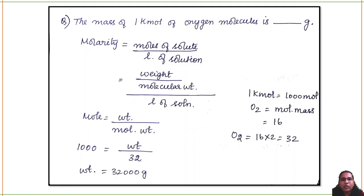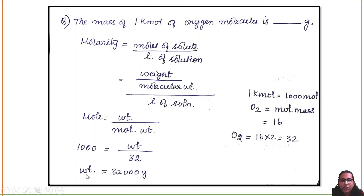Fourteenth question: the mass of one kilomole of oxygen molecule (O₂). One kilomole = 1000 moles. Moles = weight / molecular weight. Molecular weight of O₂ = 16×2 = 32 g/mol. So 1000 = weight/32, therefore weight = 32,000 grams. Thirty-two thousand grams is your answer.